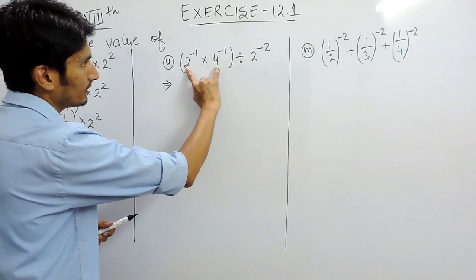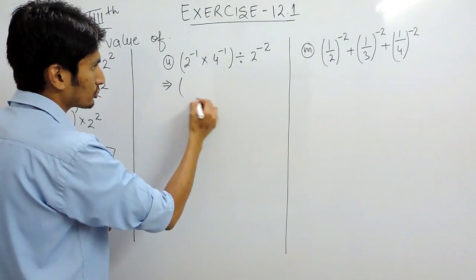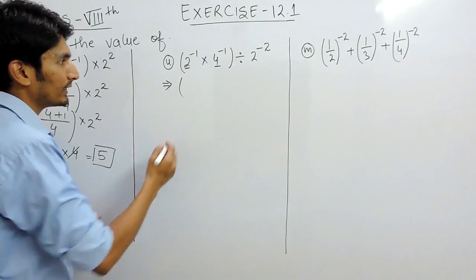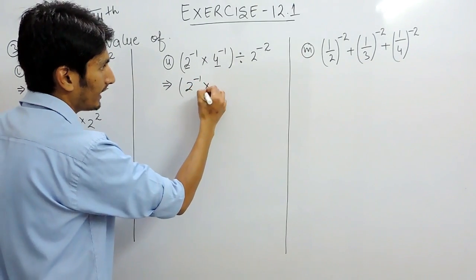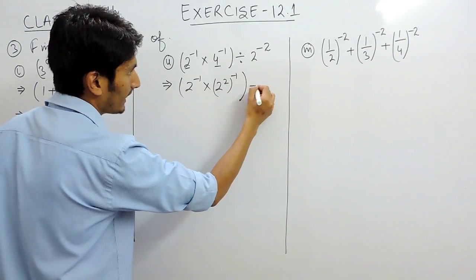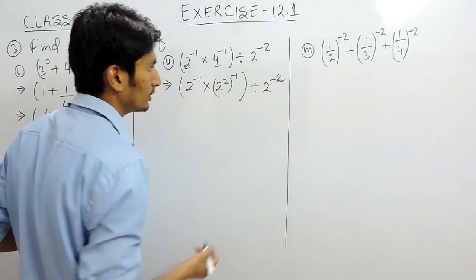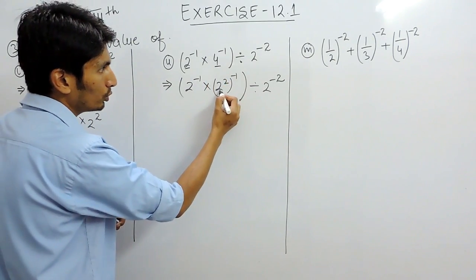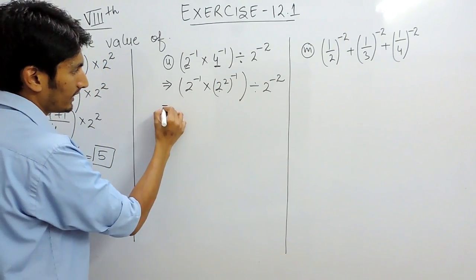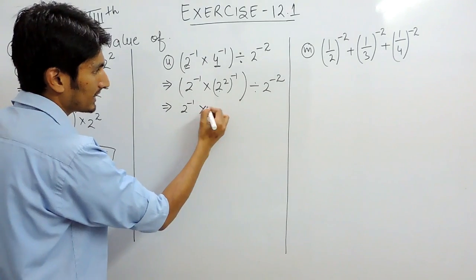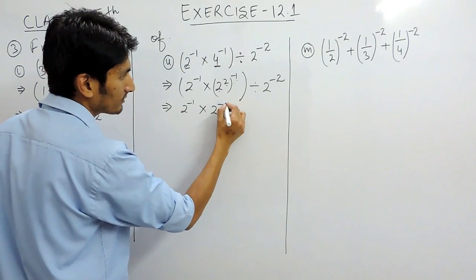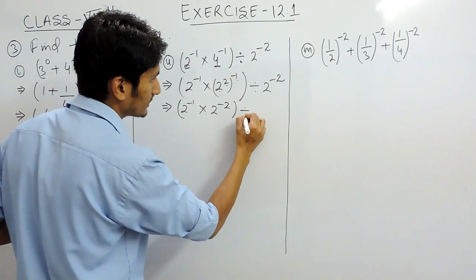Now let's find the answer for the second part. We have 2 and 4, so let's make the bases equal. This is 2 raised to power minus 1, and 4 can be written as 2 raised to power 2, minus 1, divided by 2 raised to power minus 2. Since 2 raised to power 2 equals 4, we get 2 raised to power minus 1 multiplied by 2 raised to power minus 2.